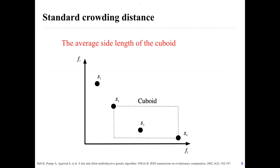We are trying to find some limitations and improve upon existing concepts. The first standard crowding distance was proposed in 2002. To calculate the crowding distance of a solution — for example, solution 3 — we use its neighbors, solution 2 and solution 4, to get the average side length of the cuboid, then derive the crowding distance of solution 3. This crowding distance is only calculated in the objective space.